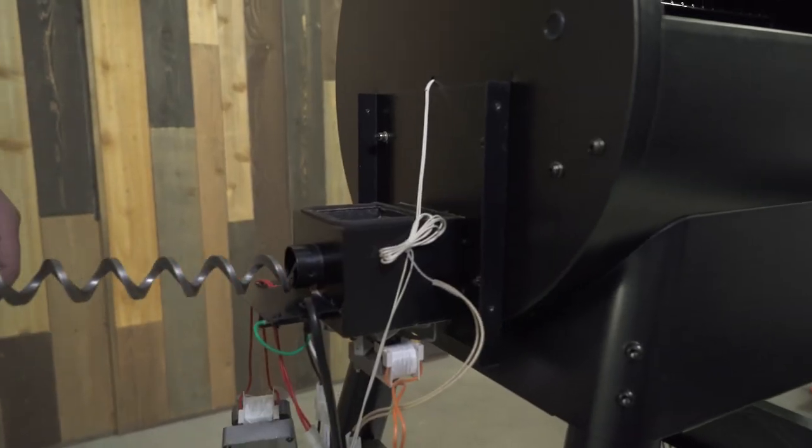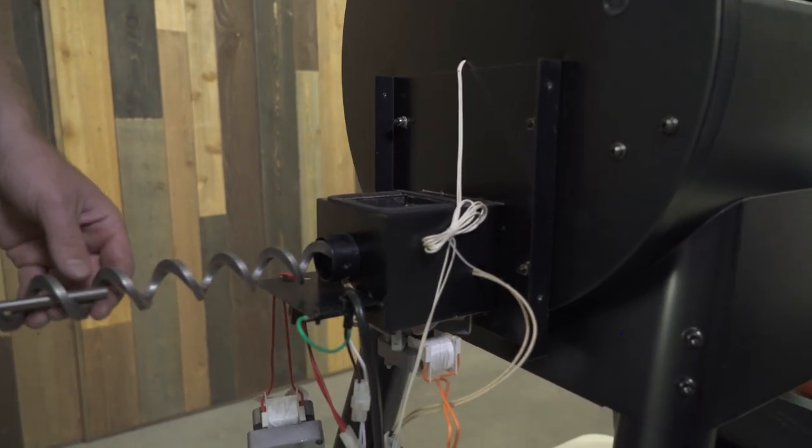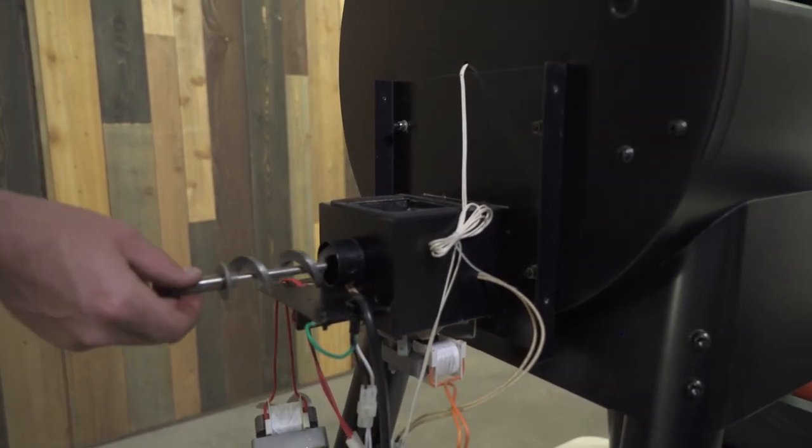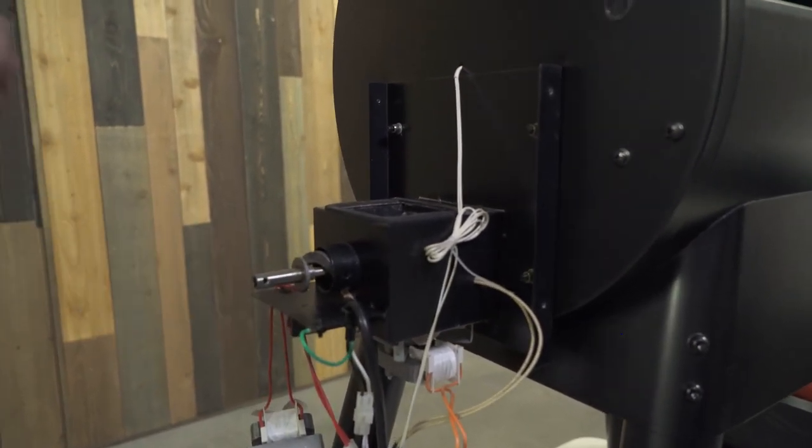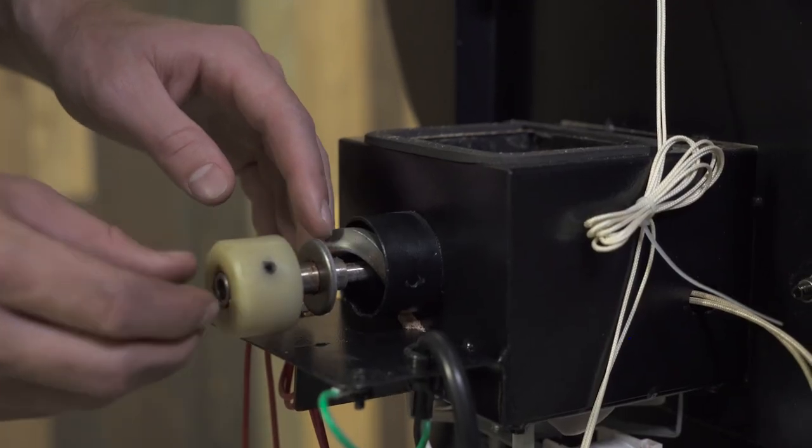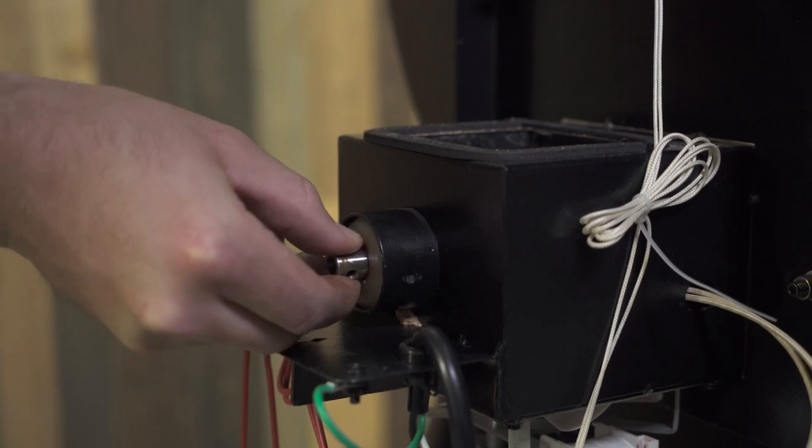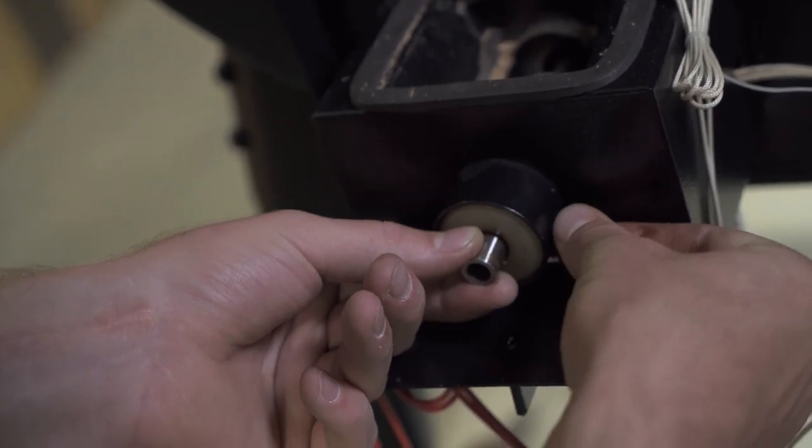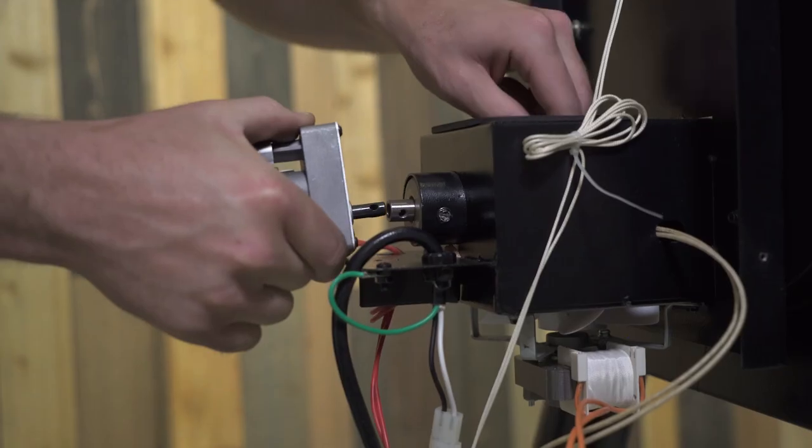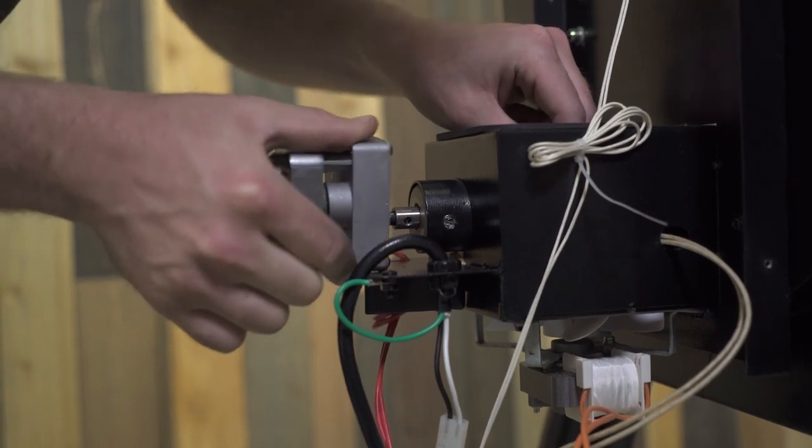Take your new replacement auger and place it back into the auger tube. Make sure the auger shaft turns freely over the motor shaft before rebolting it to the motor bracket and auger motor. Then reattach the auger shaft to the auger motor using the 5/16th nut and allen screw.